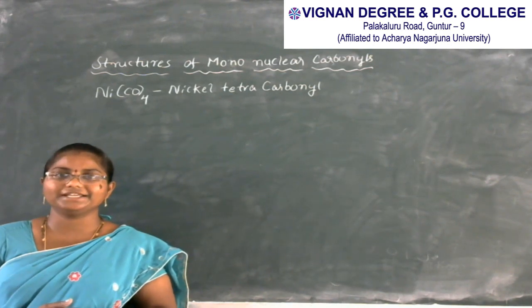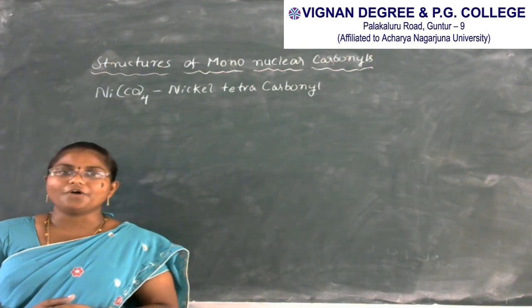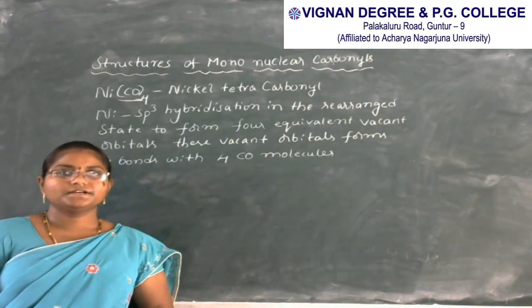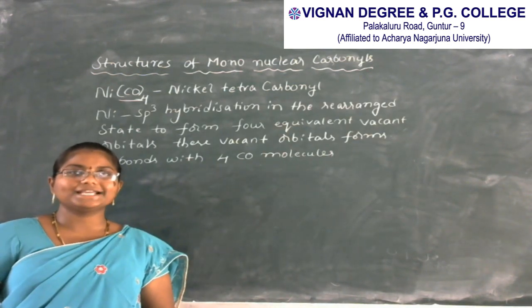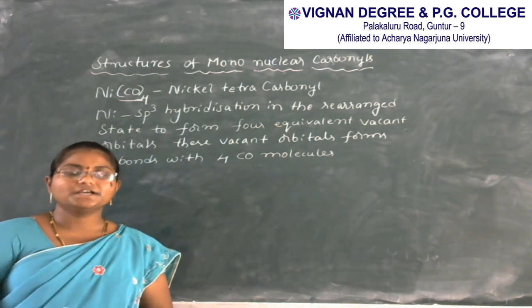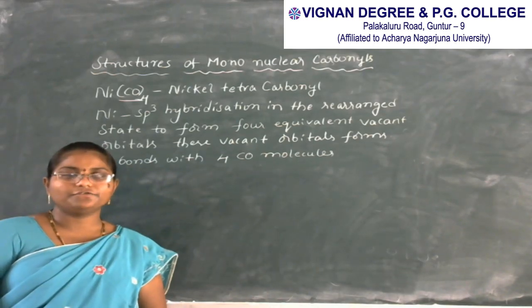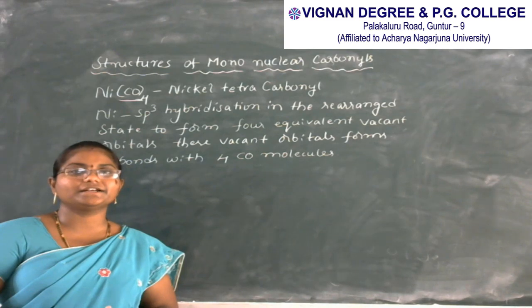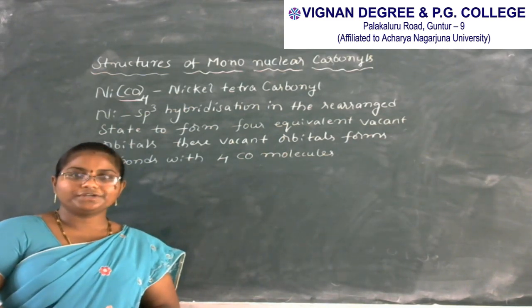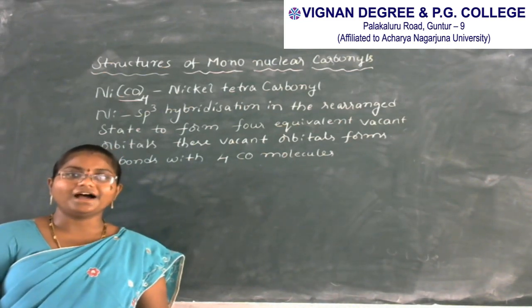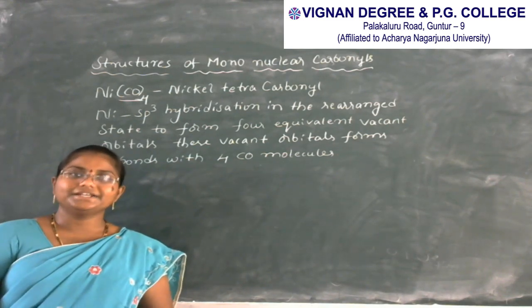For nickel tetracarbonyl, we first need to know the atomic number of nickel and its ground state electronic configuration. After writing the ground state electronic configuration, we write the filling of electrons. Nickel undergoes SP3 hybridization in the rearranged state to form 4 equivalent vacant orbitals, which allows it to form 4 bonds with 4 CO ligands.